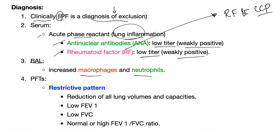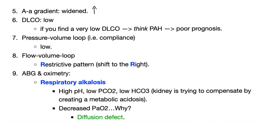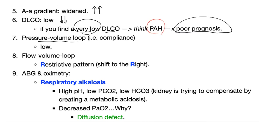Bronchoalveolar lavage shows macrophages and neutrophils. PFT shows a restrictive pattern: reduction of all lung volumes and capacities. Low FEV1, low FVC, but normal to high FEV1-to-FVC ratio. The A-a gradient is widened because the problem is in the lung. DLCO is low; if DLCO is very low, that indicates pulmonary artery hypertension. Pressure-volume loop shows decreased compliance. Flow-volume loop shows the restrictive pattern, which is a shift to the right.